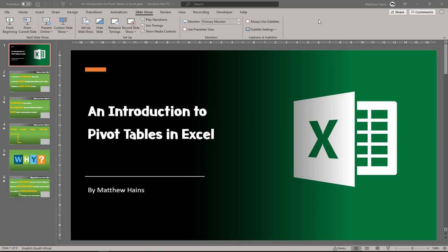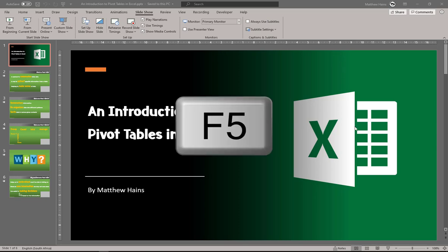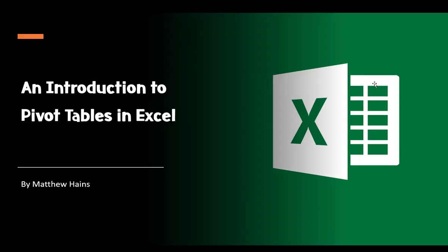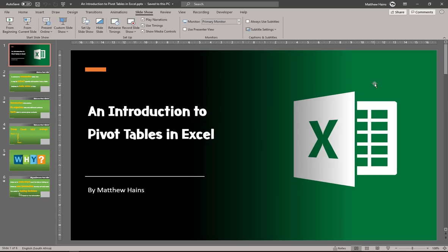First, the easiest way is just to press the F5 key on your keyboard — the Function 5 key. So you press F5 and then the slideshow begins. That's the easiest way.